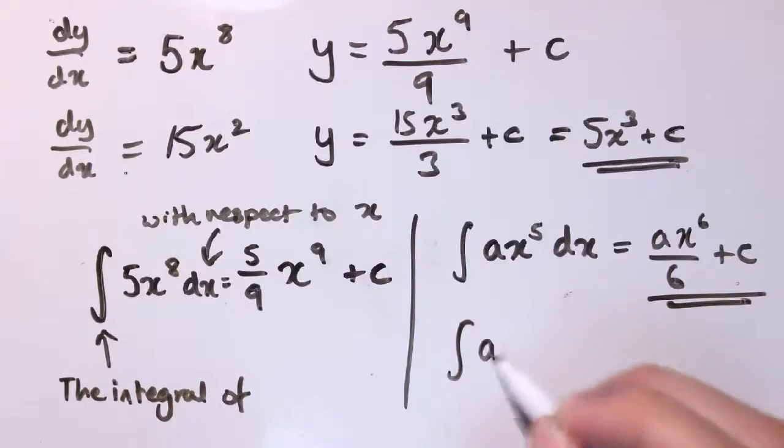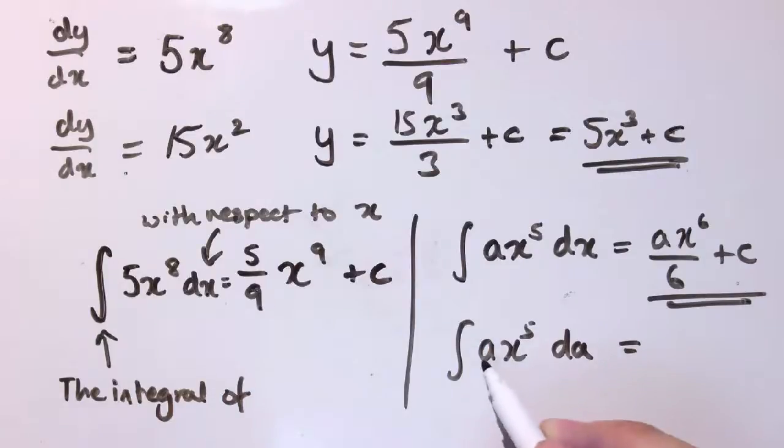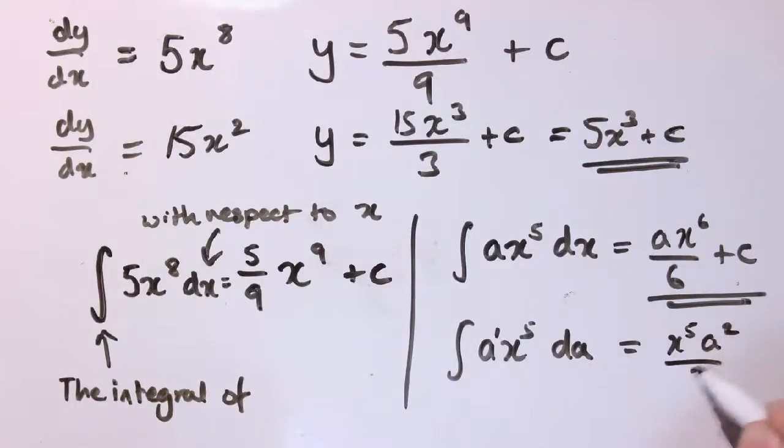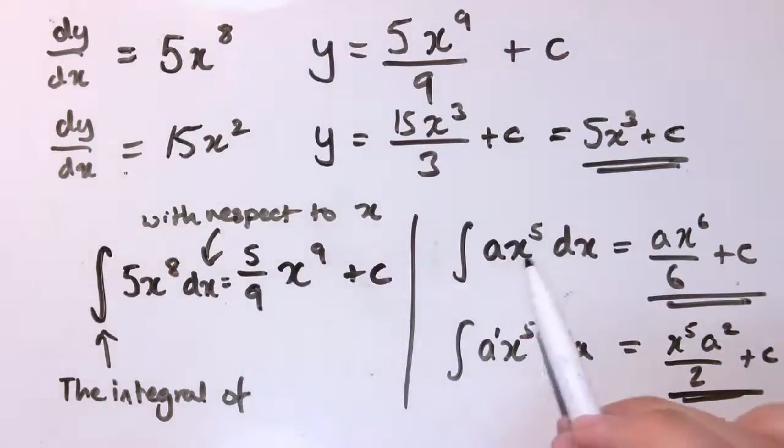Whereas, if I did this integral ax⁵ da, well, now I'd integrate the a and this x⁵ would be a constant. So, I'd have my x⁵ as a constant. Now, a is a^1. So, I'm going to increase the power by 1 to get a² and divide by the new power, which is 2 plus c. So, I get totally different answers. And these are totally different things going on here. We've got x is the variable and here a is the variable.